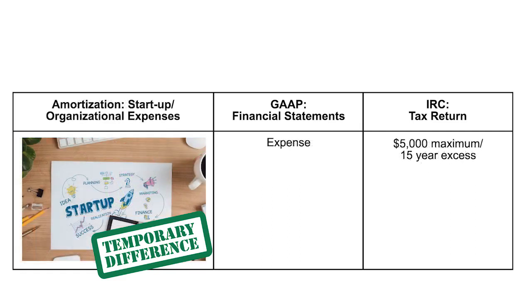Startup expenses: on the financials, you immediately expense all of them. On the tax return, the first $5,000 is immediately deductible; the excess is amortized over 180 months, which is 15 years. Remember, one of the most important things to recall is to look at the months. If they ask one of these questions, they'll say something like you started the company in July — so it's not one-fifteenth; it's six out of 180 months. The difference between full expensing on the financials and the allowable tax amount causes a temporary difference, which will also appear as an M1 adjustment.